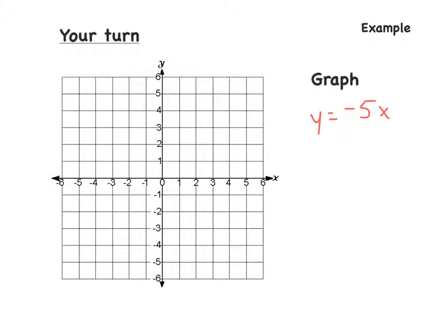Alright, first thing. We have y equals negative 5x. So what is our slope? Remember, slope and our direct variation are the exact same thing. So we have negative 5, but we need to write that as a fraction — so we have negative 5 over 1. Second step: graph (0, 0).